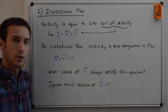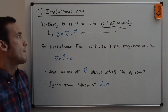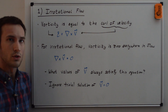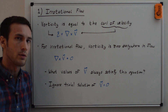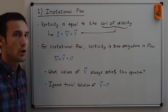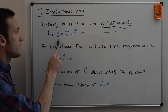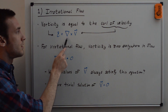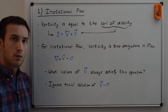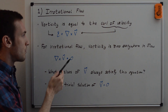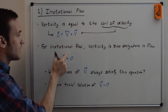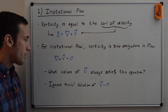Let's start with the irrotational flow assumption. We're going to use the equation for vorticity, which is just twice the angular velocity — I'll derive this in a future video. The vorticity is equal to the curl of the velocity, so vorticity equals the del operator crossed with the velocity vector. For irrotational flow, the vorticity is zero everywhere in the flow, so we can say the curl of the velocity is equal to zero everywhere.